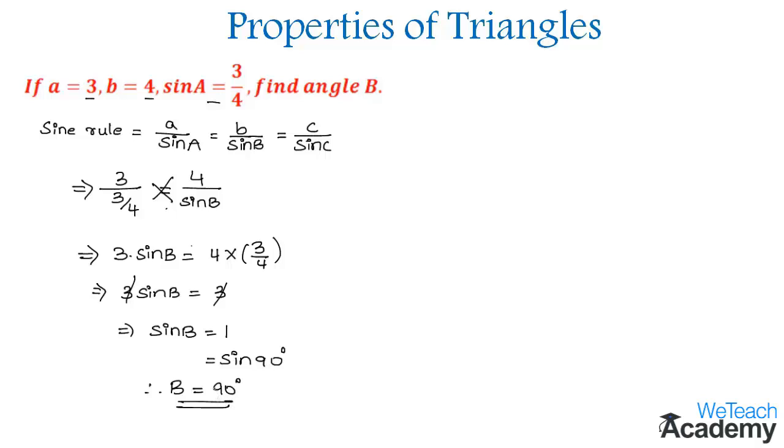Now let us consider one more example. If A = 6, B = 5, and C = 9, find angle A. Here we are given only sides, so we have to use cosine rule.